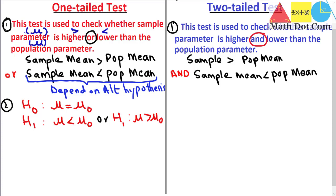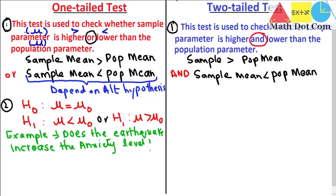For example, using the earthquake example from our previous lectures: if our research question is 'does the earthquake increase the anxiety level?', then the null hypothesis would be that the mean anxiety level of the population equals the mean anxiety level of the sample even in the presence of the earthquake. The alternative hypothesis would be that the anxiety level of the sample will be greater than the anxiety level of the population in the presence of the earthquake.